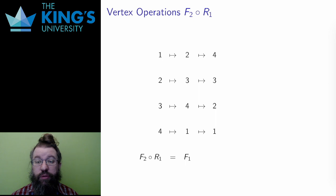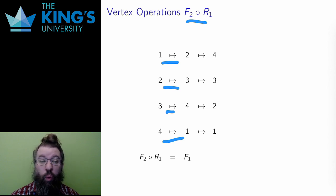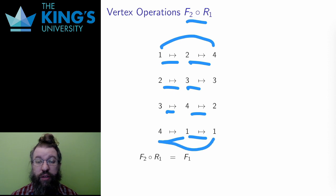Now let me do it the other way around: F2 composed with R1. In this order, I do R1 first. R1 sends 1 to 2, 2 to 3, 3 to 4, and 4 to 1. So I write these vertex operations. Then I apply F2. 1 and 3 were unchanged, but 2 and 4 were flipped. The result is a transformation that sends 1 to 4, 4 to 1, 2 to 3, and 3 to 2.